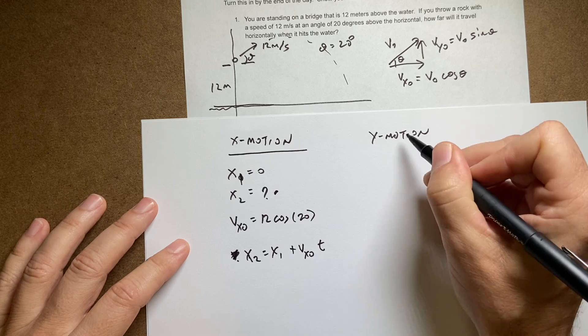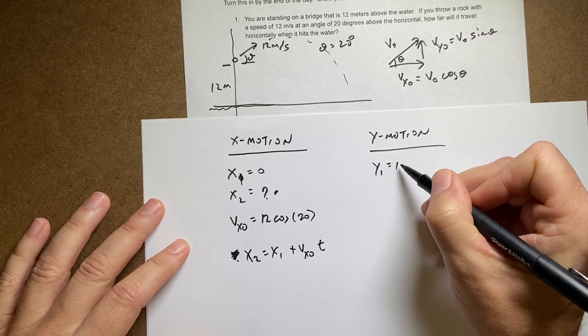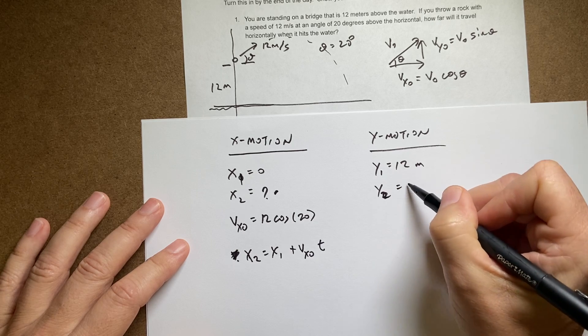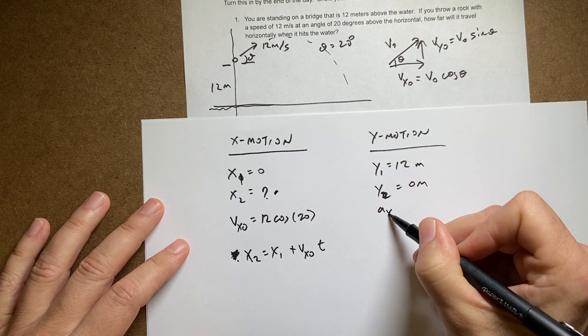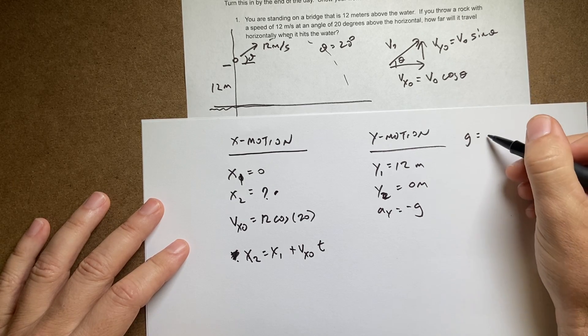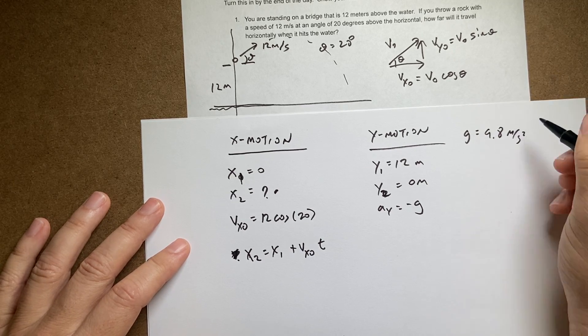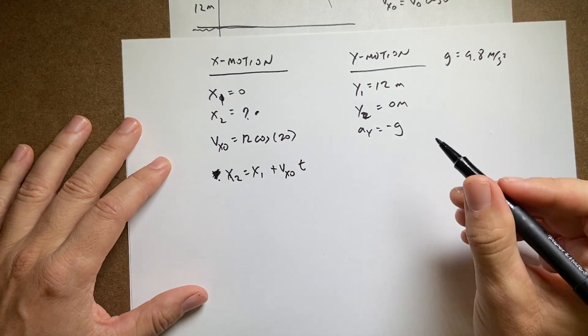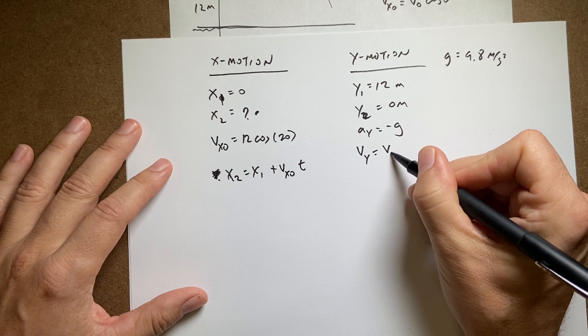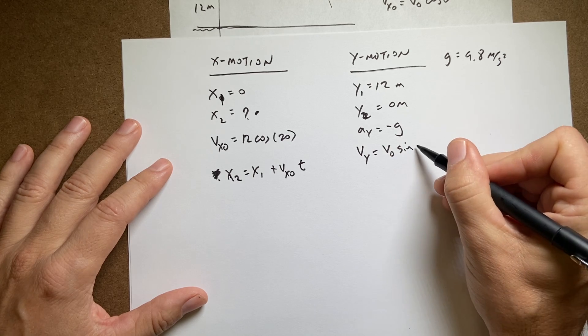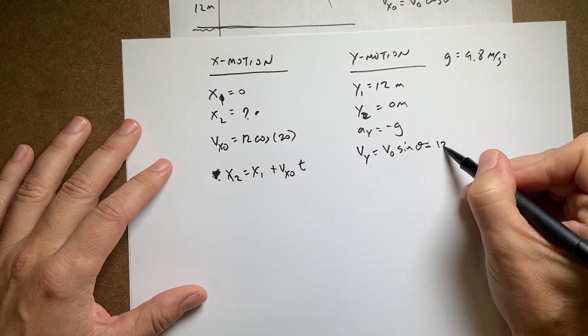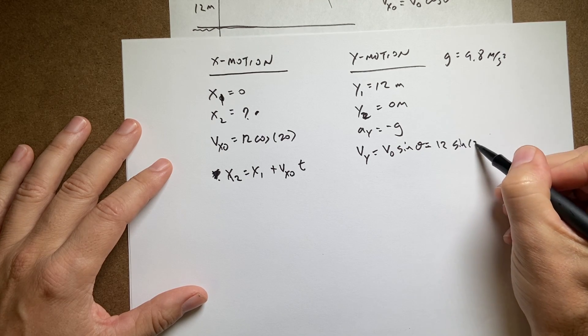So the y motion, I have the initial y is going to be 12. The final y is zero. The y acceleration is negative g, where g is 9.8 meters per second squared. And then I have the initial y velocity is going to be v zero sine of theta. So now I'm going to get this value.